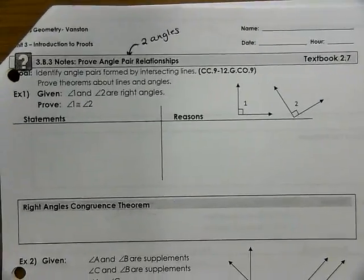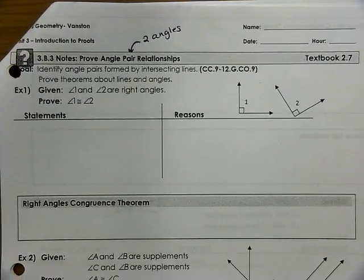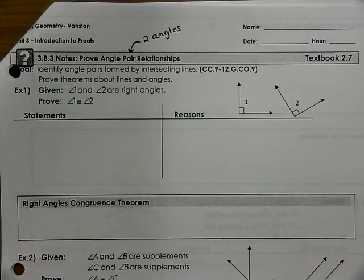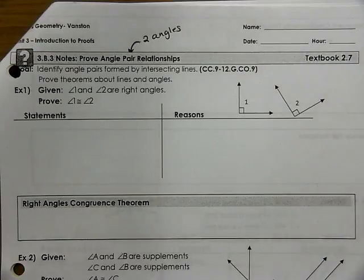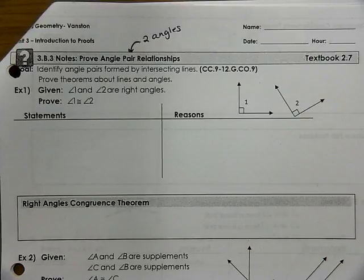We've talked about angle-pair relationships in the past — we've talked about supplementary angles, complementary angles, vertical angles, all these different types of relationships. But now we're going to talk about what we can say about these angles that share these relationships.